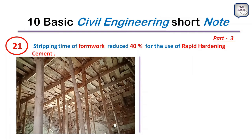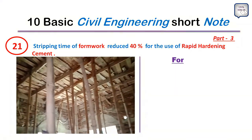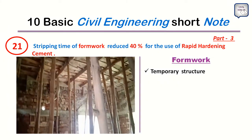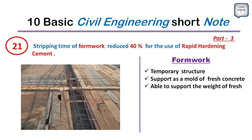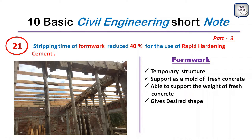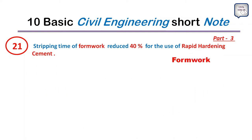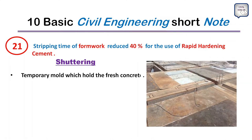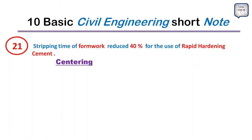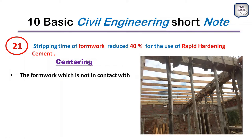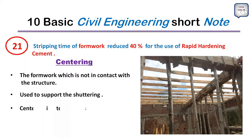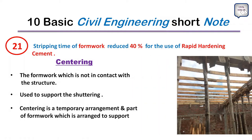Point 21: Stripping time of formwork reduces by 40 percent with the use of rapid hardening cement. Formwork is a temporary structure that supports the mold of fresh concrete and gives it the desired shape. It is mainly made of timber and steel. Formwork has two parts: shuttering, which is the temporary mold holding fresh concrete (accounting for 23–25% of total structure expenditure), and centering, which supports the shuttering and is used for horizontal members.